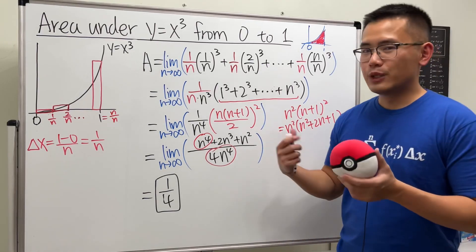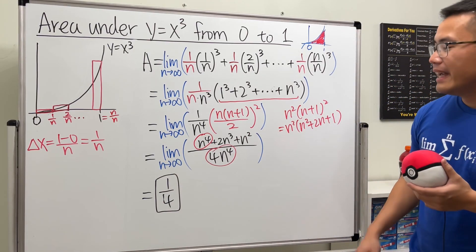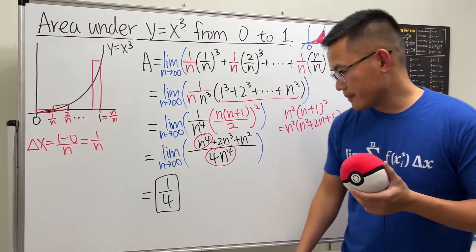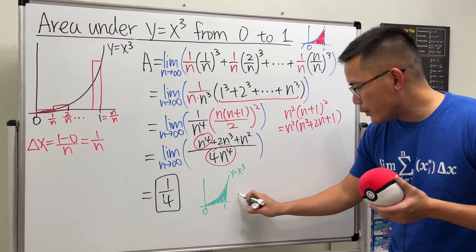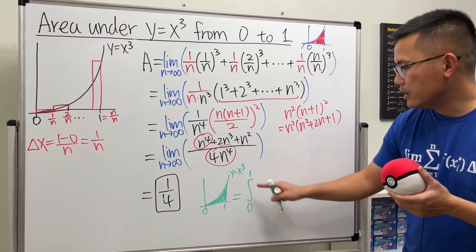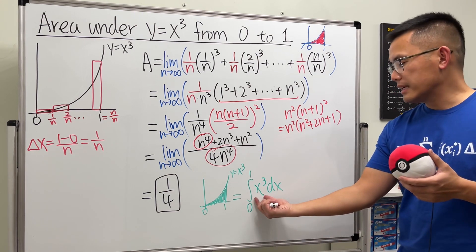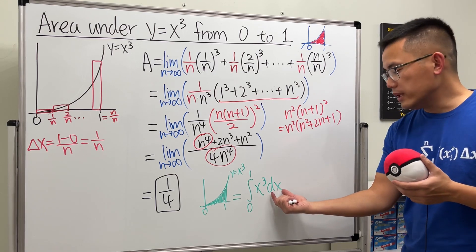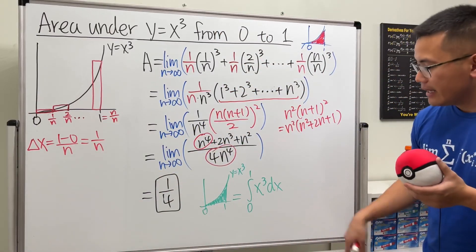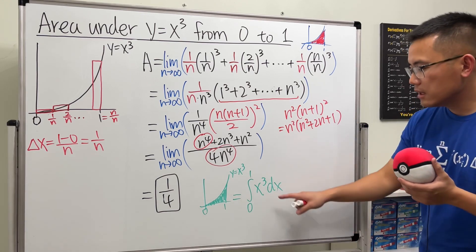That's the rectangle method — technically called the Riemann sum. Now let's talk about how to get the area using integration. This area equals the integral from zero to one of x³ dx, where x³ is like the height of the rectangle and dx is like the width — the super version of delta x.